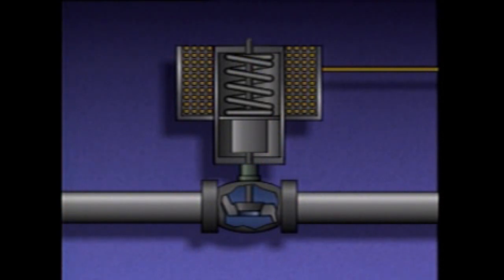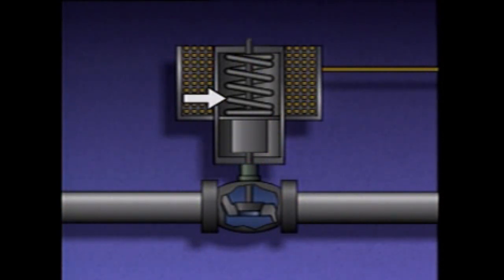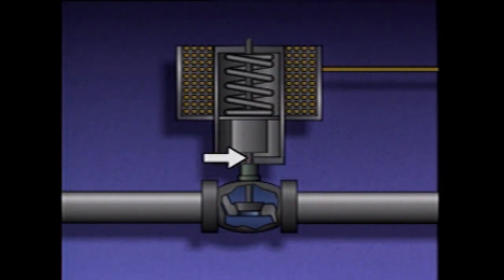A solenoid actuator consists of a wire coil, a spring, an armature or core, and a stem which is connected to a valve.